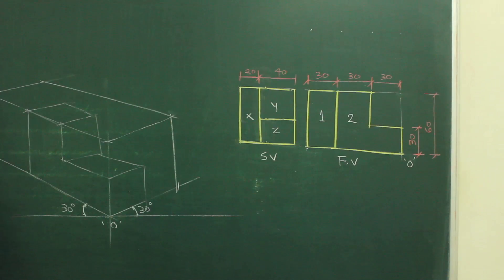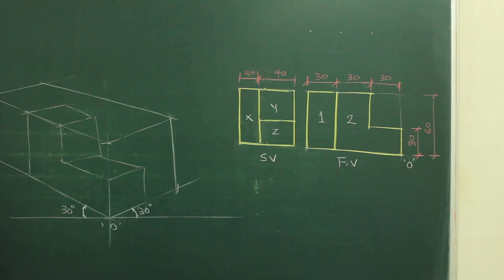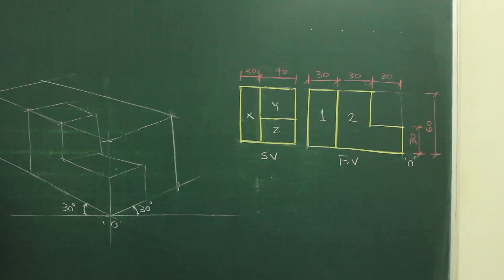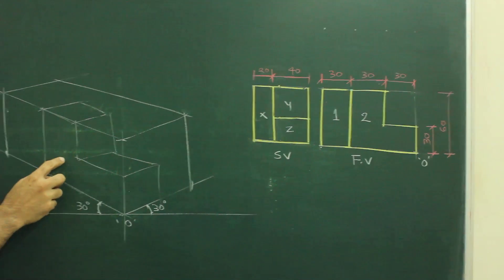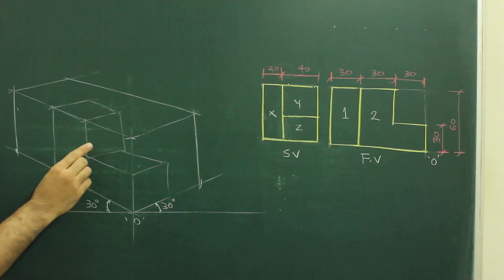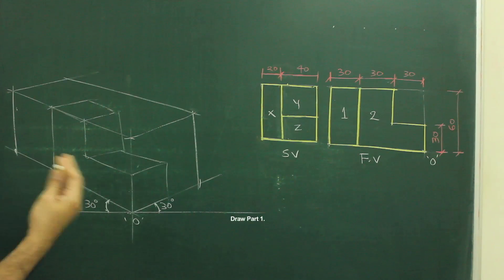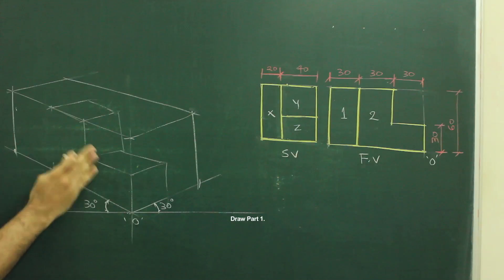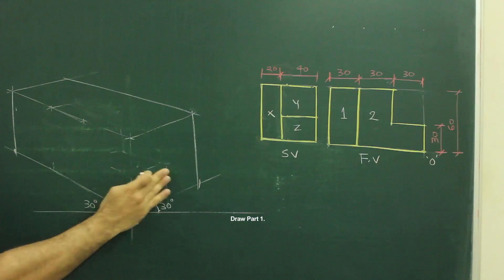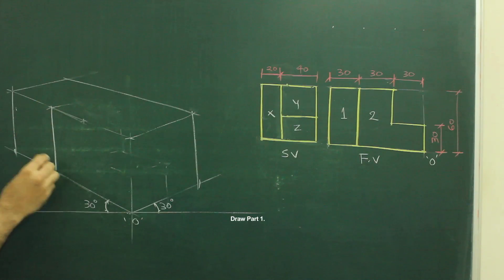So we need to come to a conclusion over here that which part is nearer to the observer, 1 or 2? I have already tried part 2, but you have seen that it is not gelling well with the side view. So we need to take part 1. I am not taking part 2. I will take part 1. So first I will draw part 1.